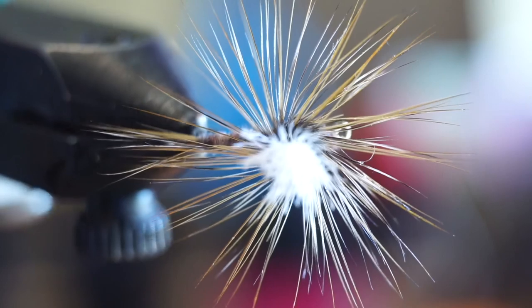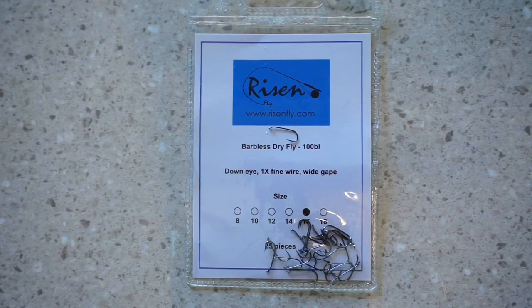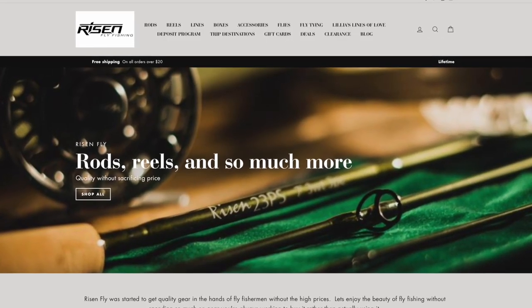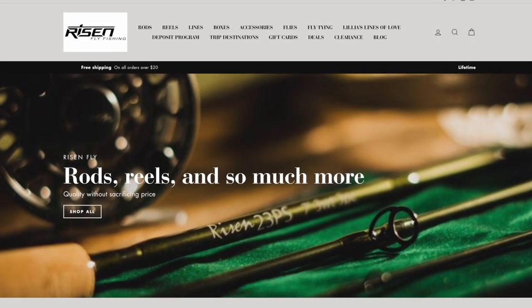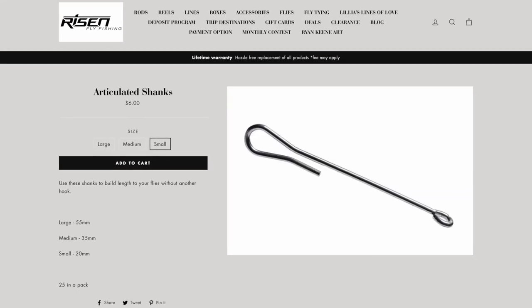Well as always I listed all the materials in the description section of this video. Some of the materials like these awesome hooks came from a company called Risen, which offered all of my subscribers a discount. Type in McFly at checkout and you will get an additional 15% off of their already amazing prices on gear, apparel, and materials.